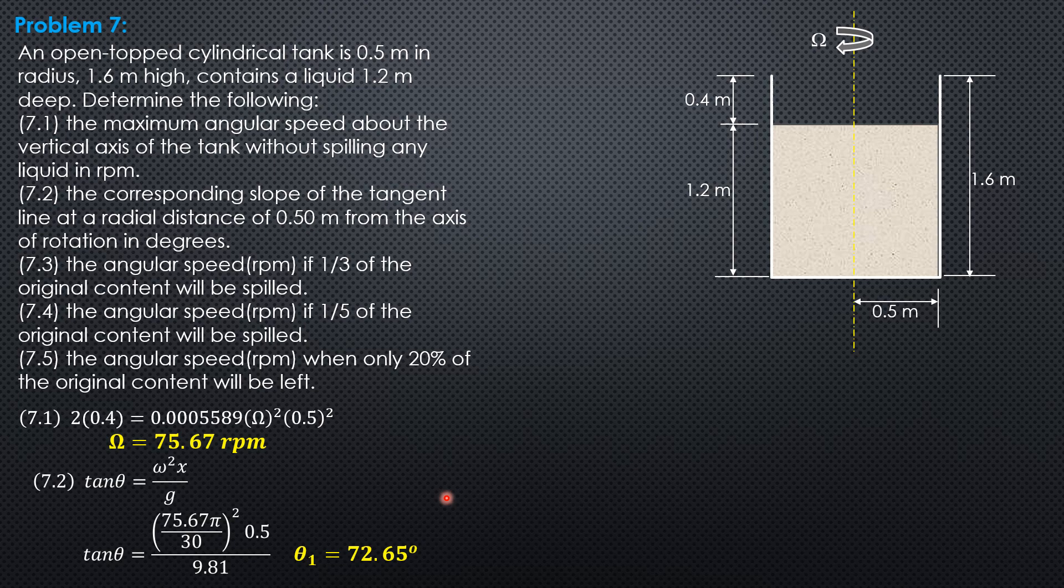Then for the third question, the angular speed if one third of the original content will be spilled. So that means one third of 1.2. So let's remove that. One third of 1.2 is 0.4.